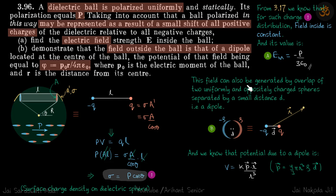So this field can also be generated by overlap of two uniformly and oppositely charged spheres separated by small distance d, that is a dipole. So you can form this kind of distribution by overlap of two charged spheres or like he suggests it can be by a small shift of all positive charges of the dielectric relative to all negative charges.